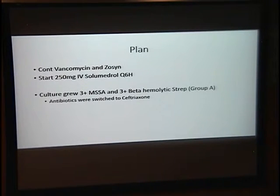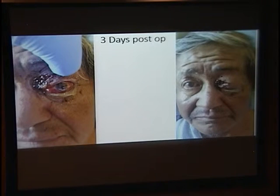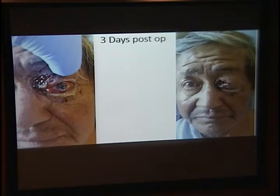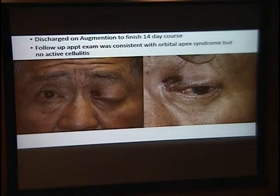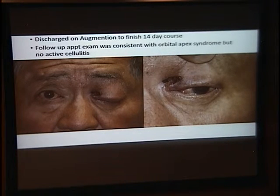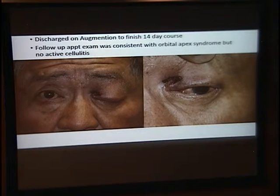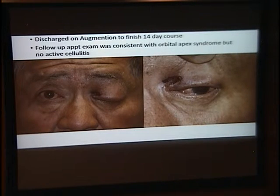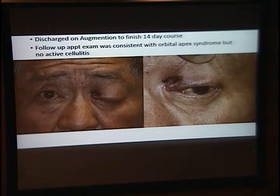At follow-up, he still could not move his eye and had complete ptosis, but was no longer infected or inflamed. Interestingly, despite the severity of the infection, his white count never exceeded 10 and he was never febrile or septic. He never met sepsis criteria. This was interesting given no past medical history other than alcoholism. This made me reflect on all the eyelid lacerations I've managed on call, and how rarely I've started oral antibiotics — usually only for dog bites. Should we be doing prophylactic antibiotics for eyelid lacerations more broadly?